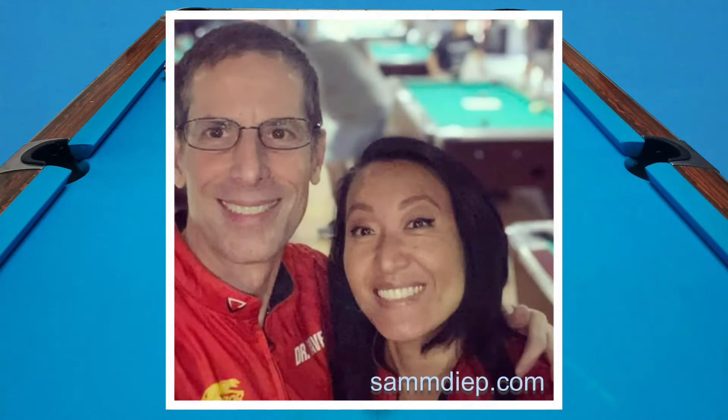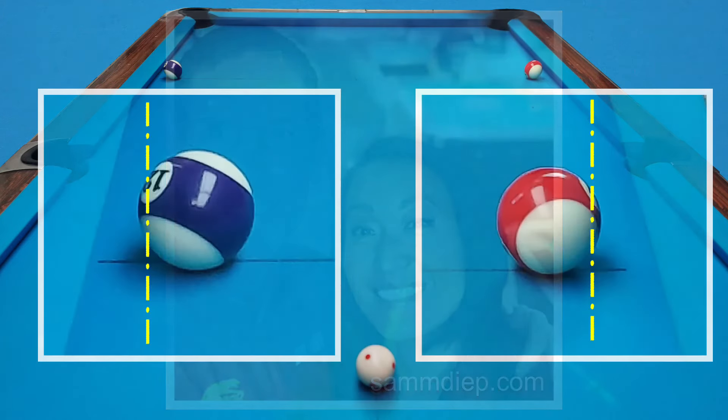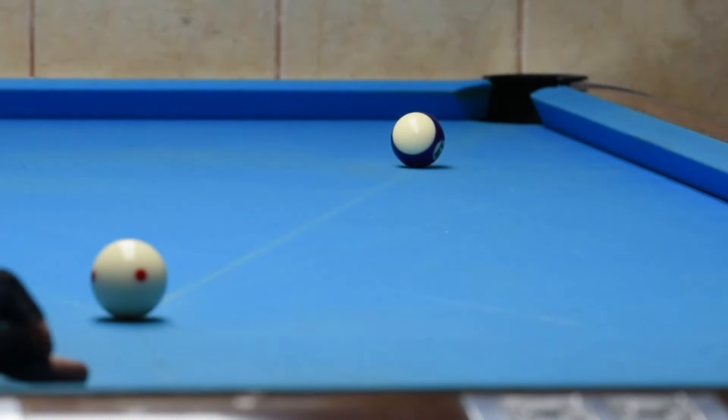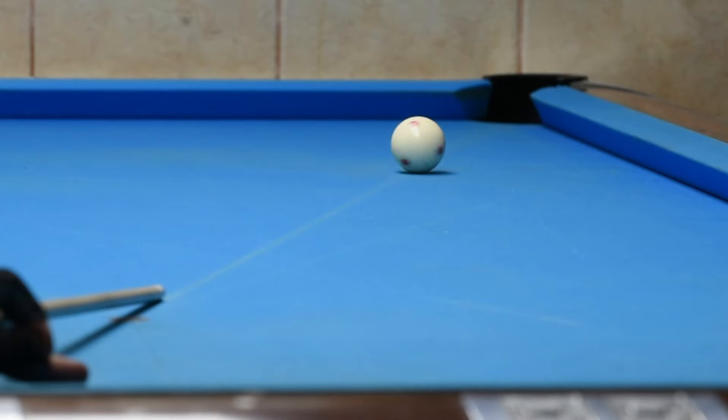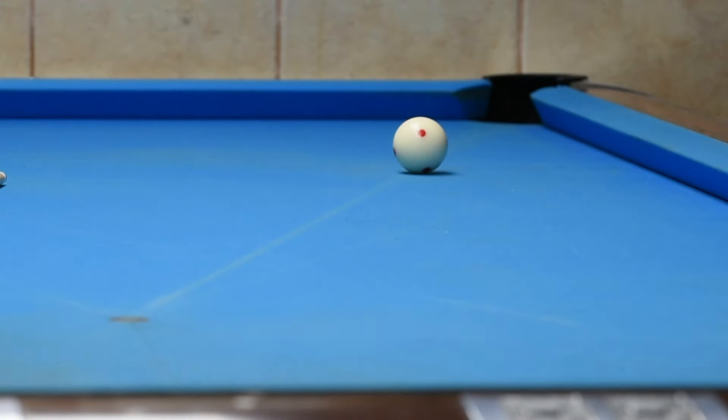This realization sparked my journey to discover the cause. I must give Sam Diepvidal and Dr. Dave Alkiator huge credit for pointing the way. Today, my aiming point is exactly the same for each shot. Here's another example. Does this sometimes happen to you when you shoot a stop shot? One cause for unintentional side spin on the cue ball is a misaligned vision center.